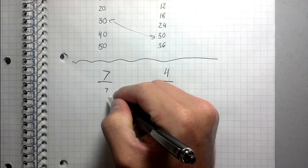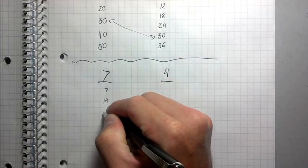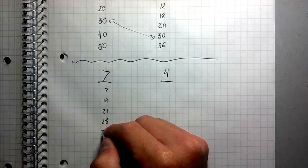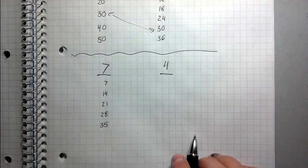I'm going to do the same thing. I'm going to list the multiples of 7: 7, 14, 21, 28, 35, et cetera, et cetera, et cetera.